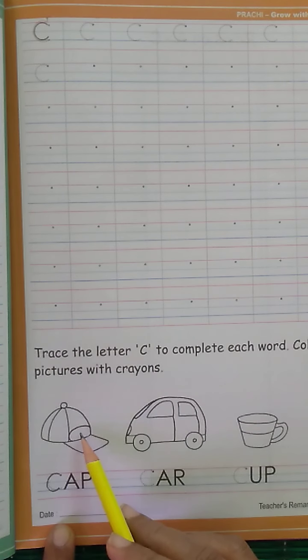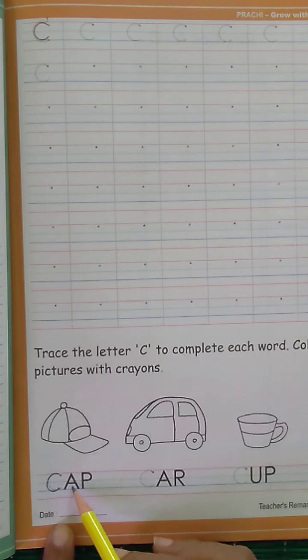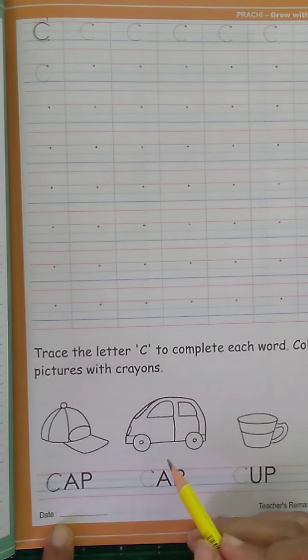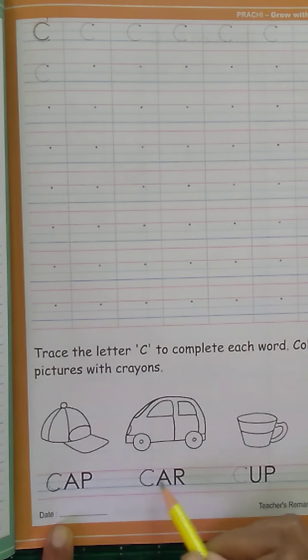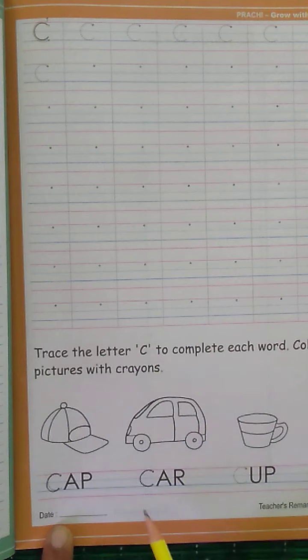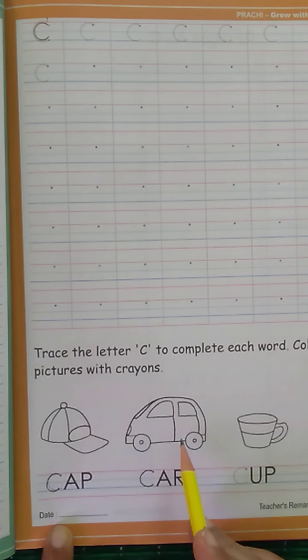What is this? It's a cap. C-A-P. Cap. C-A-P. Cap. Cap. Trace the letter. C-A-R. Car. C-A-R. Car. C-A-R. Car.